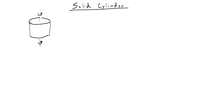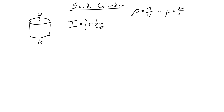Now we have a solid cylinder that's uniform and rotating around its center. We want to find its moment of inertia using the same integral equation. To use this equation we have to replace dm with something else, which means we need to look at the density of the object. Since it's three-dimensional, we use rho to represent density: rho equals total mass M divided by total volume V. Because the cylinder is uniform, the ratio of mass to volume is the same at every point, so rho also equals dm over dV. The volume of a cylinder is pi r squared times l.